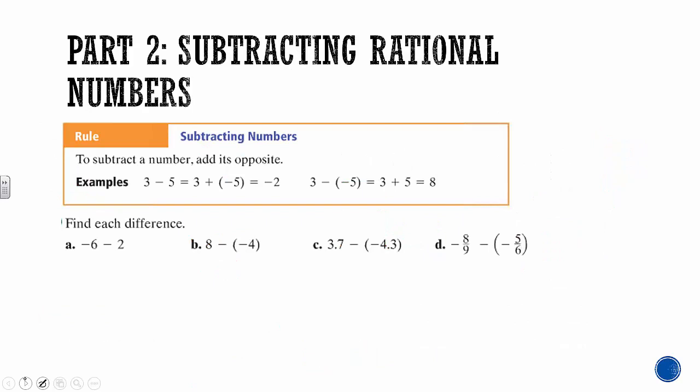Now on to subtracting numbers. To subtract a number, all we're really doing is adding its opposite, then following all the rules we used with addition. So instead of 3 minus 5, what we're really doing is 3 plus negative 5. And even ones like subtracting a negative — two negatives make a positive because we turn it to addition and find the opposite of the number. The opposite of negative 5 is positive 5.